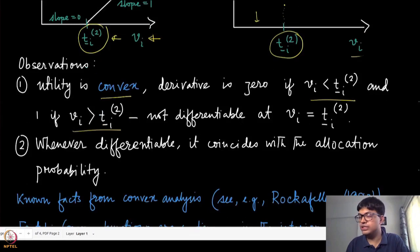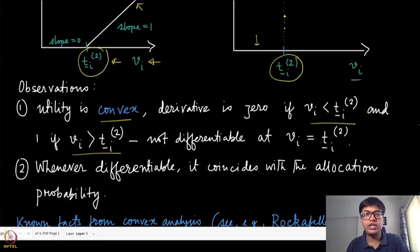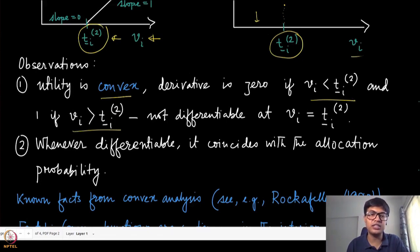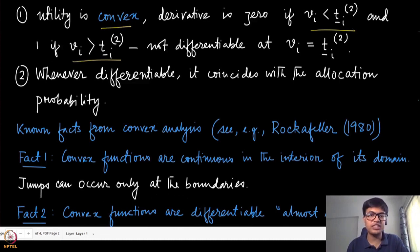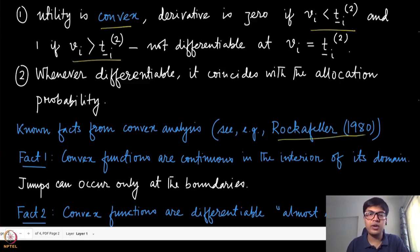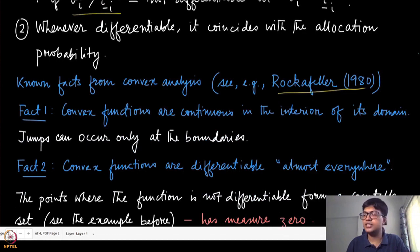A lot of our understanding of single object allocation will depend on properties of convex functions. In the rest of this module we will spend time discussing known results from convex analysis. For most results we will not provide a proof as they are out of scope, but wherever necessary we will give intuition. The first fact from convex analysis is that convex functions are continuous in the interior of their domain.